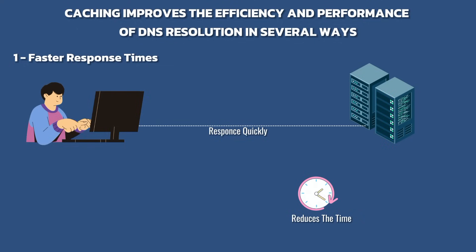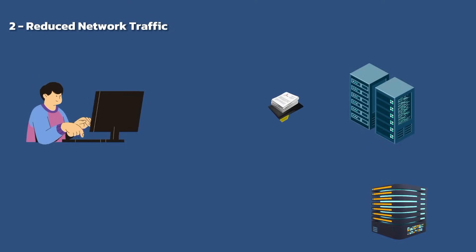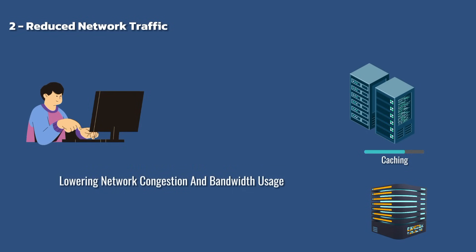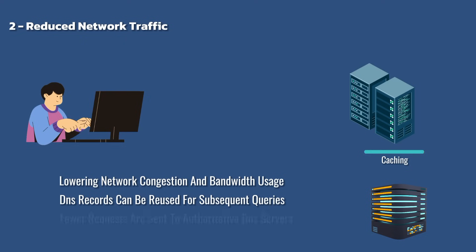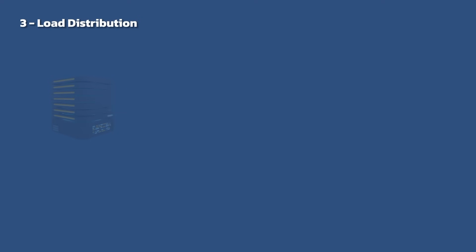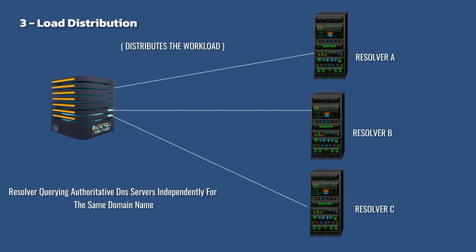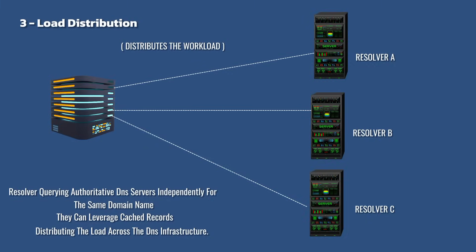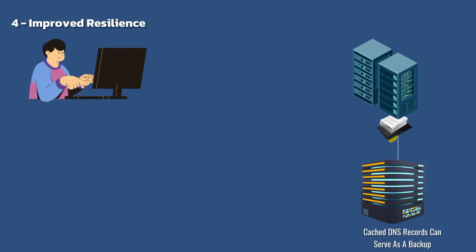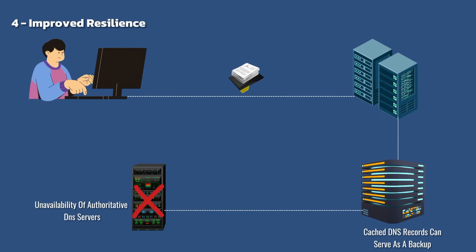Caching reduces the time it takes to resolve domain names and improves overall responsiveness of internet services. It also reduces network traffic by lowering the number of DNS queries that need to traverse the internet, reducing congestion and bandwidth usage. Additionally, caching distributes the workload among DNS servers — instead of every resolver querying authoritative servers independently for the same domain, they can leverage cached records, distributing the load across the DNS infrastructure. Cached DNS records can also serve as a backup in case of network disruptions or temporary unavailability of authoritative DNS servers.